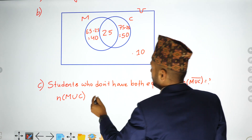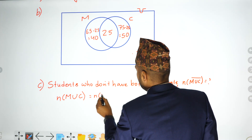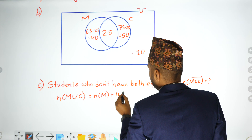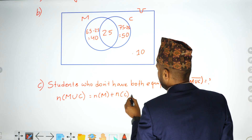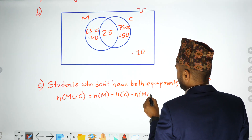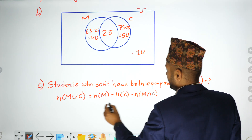Using the formula: n(M) + n(C) minus n(M intersection C).